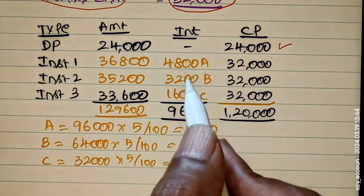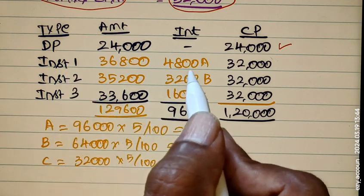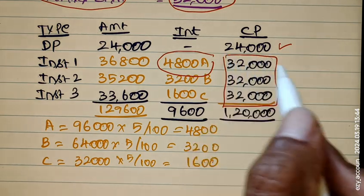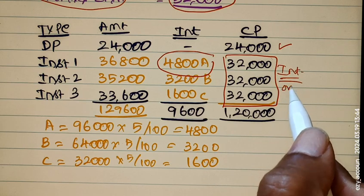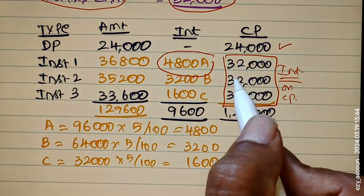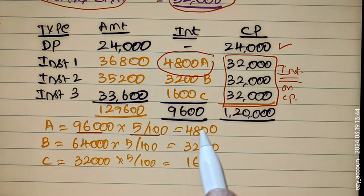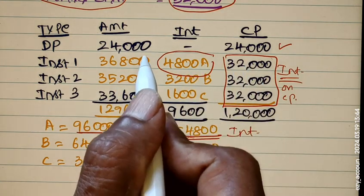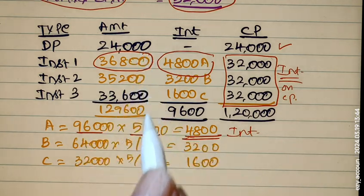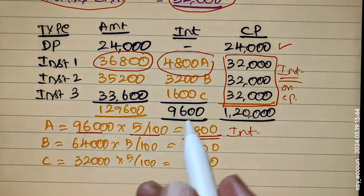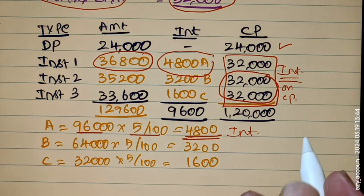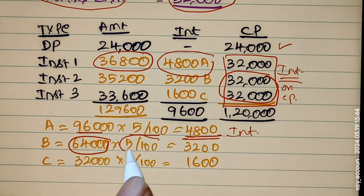Now we have to find out the Interest Amount on the 3 installments. You pay interest only on the Cash Price balance. So: 3 installments, balance is 96,000 (three into 32,000) into 5 percent — that gives 4,800 rupees interest in the first installment.